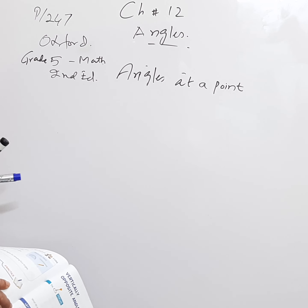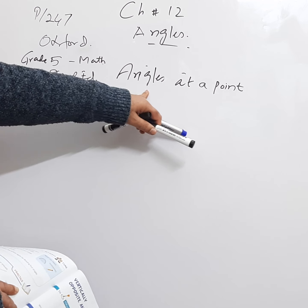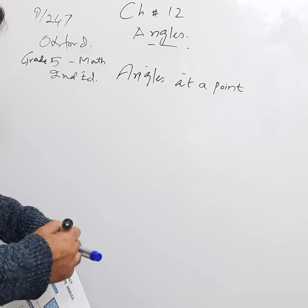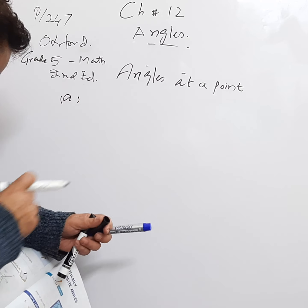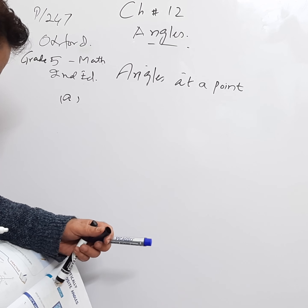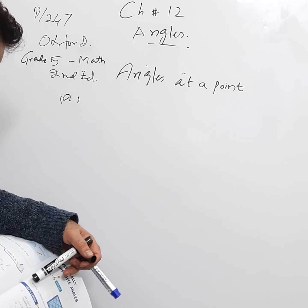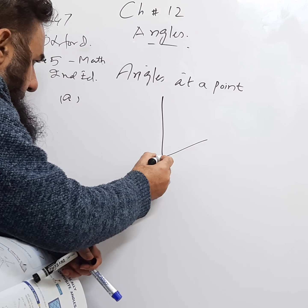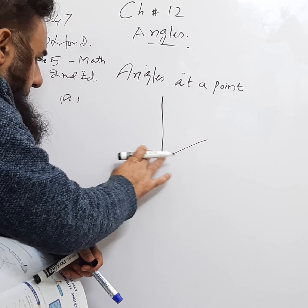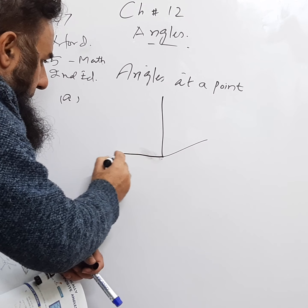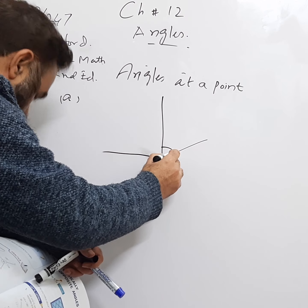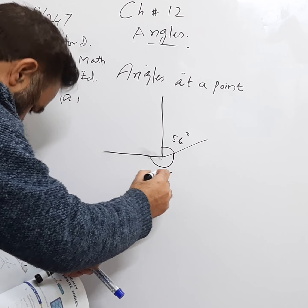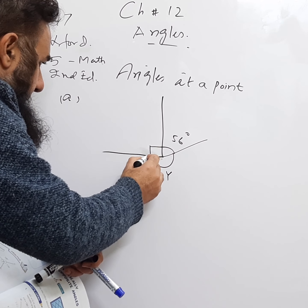We will be doing questions on page 247. The subject is angles at a point. In part a, there is a diagram where we need to find the unknown marked angles. In the diagram, one angle is 56°, one is y, and one is a right angle (l).